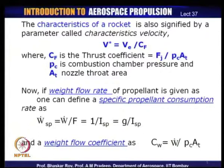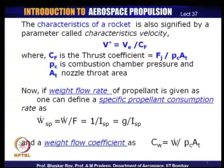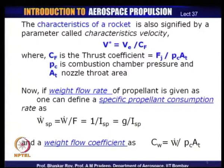The characteristic velocity V-star is expressed in terms of exhaust velocity V_E and thrust coefficient C_f — which is not the same as specific impulse, and is also different from thrust coefficients defined for other types of jet engines. The rocket engine thrust coefficient is defined somewhat differently. Looking at weight flow and its relationship with ISP: the specific propellant consumption can be written as weight flow divided by thrust, equal to 1/ISP, or G/ISP depending on units.